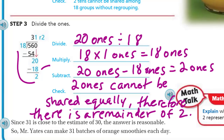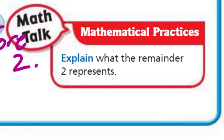Since 31 is close to the estimate of 30, the answer is reasonable. Mr. Yates can make 31 batches of orange smoothies each day. We had an estimate of 30 — 600 divided by 20 — so yes, it's very reasonable. Explain what the remainder 2 represents: there was an additional 2 ounces that we weren't able to put in a batch. He needed 18 ounces for each batch, so he was able to make 31 batches, but unfortunately there were 2 ounces left over. That's what that 2 represents — the leftover.